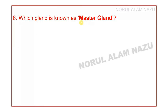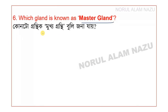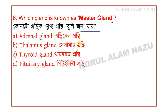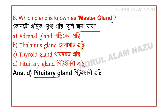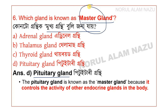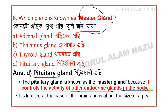Question 6: Which gland is known as the master gland? The options are adrenal gland, thalamus gland, thyroid gland, and pituitary gland. The answer is pituitary gland. The pituitary gland is known as the master gland because it controls the activity of other endocrine glands in the body.